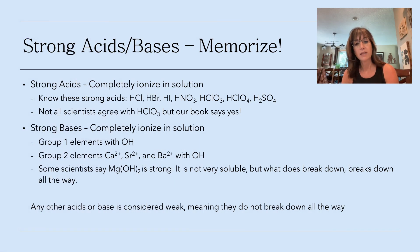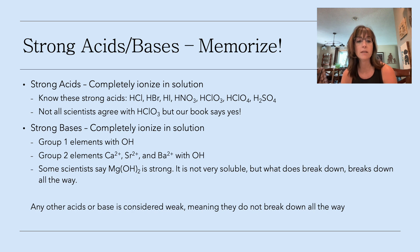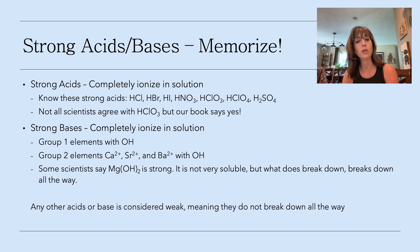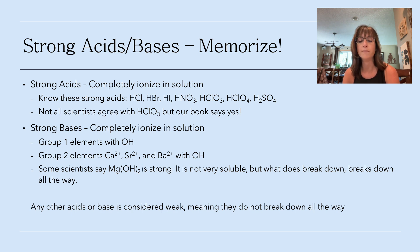Strong simply means it breaks down, dissociates, or ionizes completely. Weak does not. You need to memorize the strong acids and the strong bases. The strong acids are HCl, HBr, HI, HNO3, HClO3, HClO4, and H2SO4. Not all scientists agree that chloric acid is a strong acid — your book says it is, so we'll go with it.